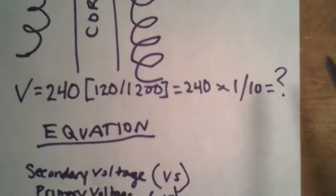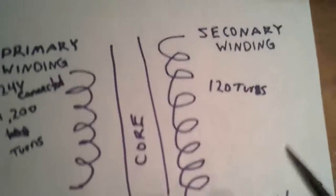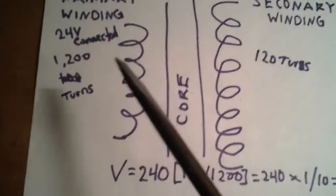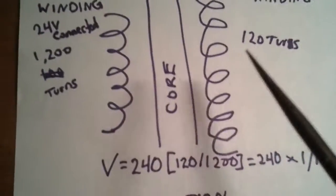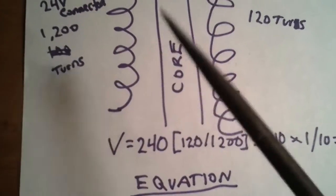The output voltage would be 24 volts on the output. Because the transformer works by the ratio of turns in the primary winding and the secondary winding between the iron core.